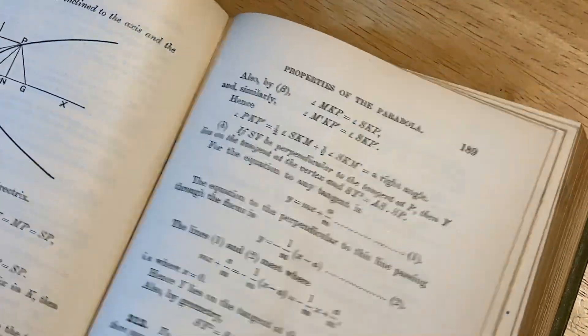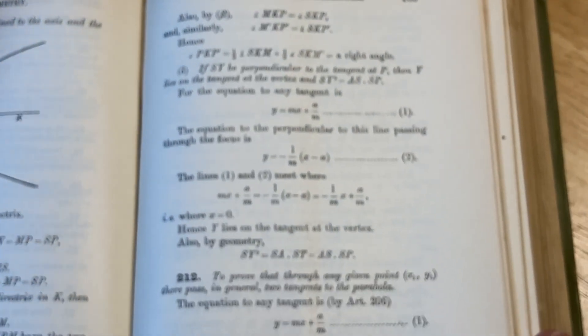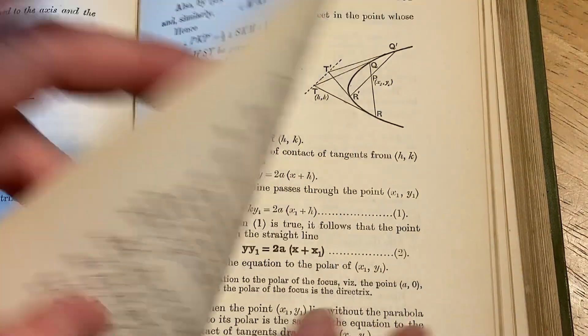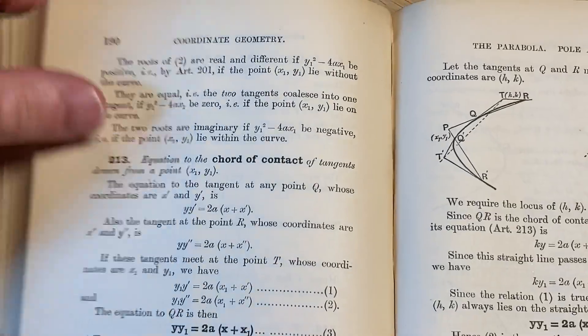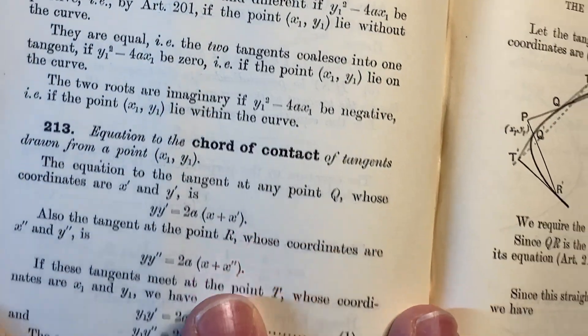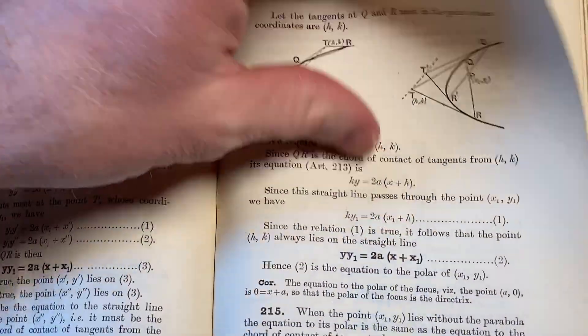It just smells amazing — I just got to give it another whiff here. I keep smelling it. And here: properties of the parabola. Wow, this is cool. Equation to the chord of contact of tangents drawn from point (x₁, y₁). It's pretty in-depth.